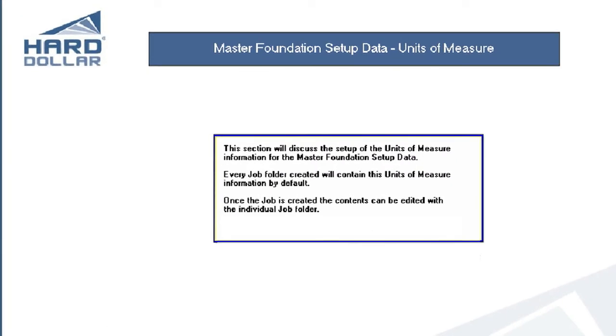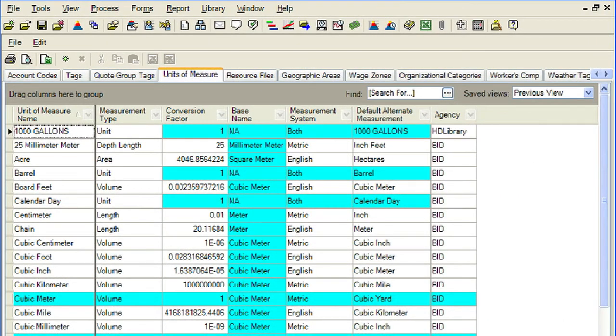This section will discuss the setup of Units of Measure information for the Master Foundation Setup Data. Every job folder created will automatically include this Units of Measure information by default. Once the job is created, the contents can be edited within the individual job folders. The Foundation Setup Data Units of Measure tab maintains English — also known as the American Standard and American In-Pound systems — to metric measurement conversions. These conversion factors allow you to immediately convert quantities, which will change the unit cost and related productivity data from one measurement system to the other. Hard Dollar provides the most common conversion factors; if you need any additional conversions, you can simply add them to the library. Any unit of measure, whether English or metric, that you wish to use in an estimate must first be defined in the Foundation Setup Data Units of Measures tab.